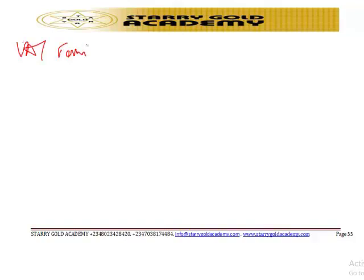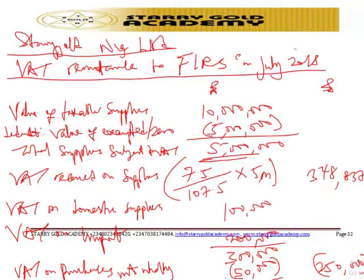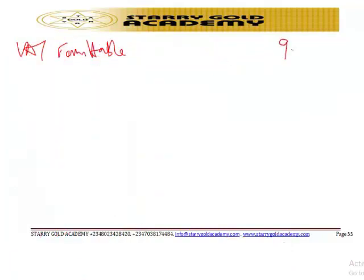Deducting the net input VAT of 250,000 Naira from the output VAT of 348,837 Naira gives us VAT remittable — VAT payable — of approximately 98,837 Naira at the end of the month.